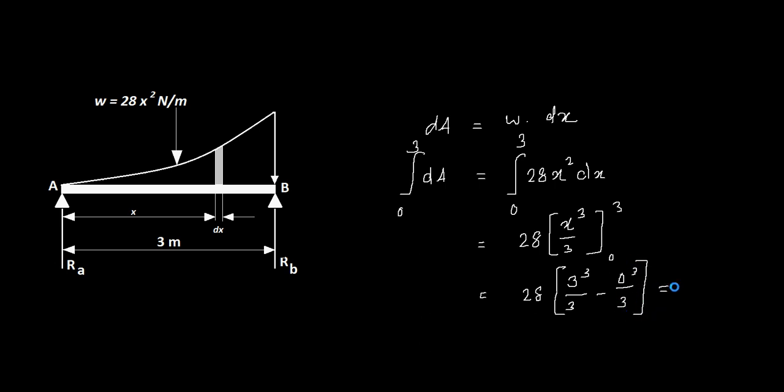That is 28 × (3³/3) - (0³/3), which gives you 28 × 9, or 28 × 3² = 252. That is the area of this given shape and therefore the total force of this curved force system is 252 Newton.